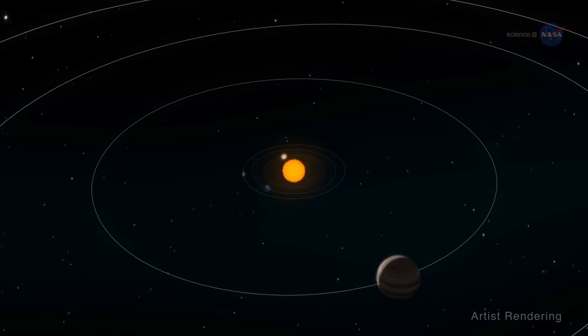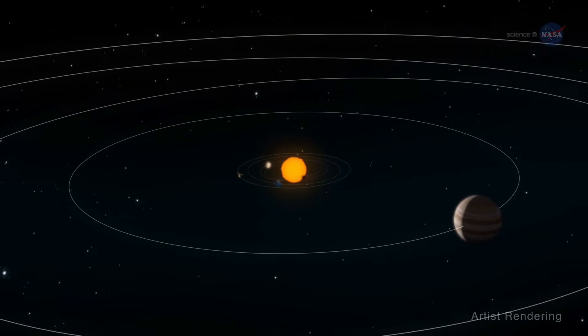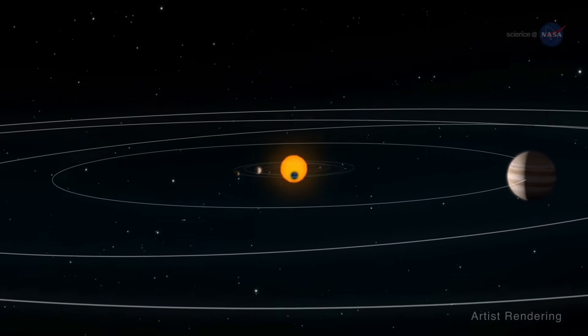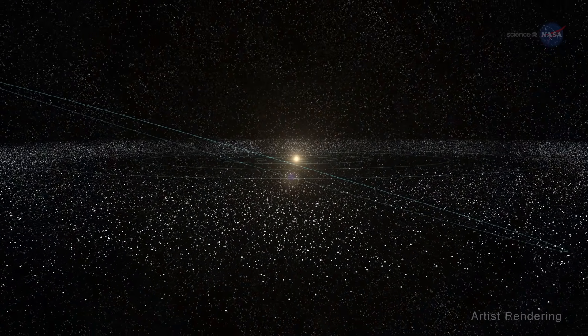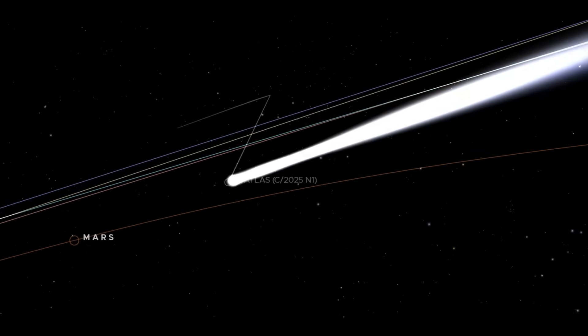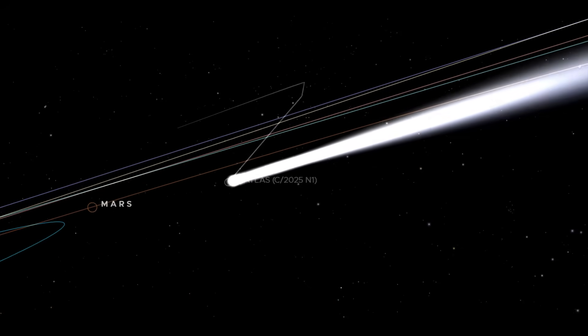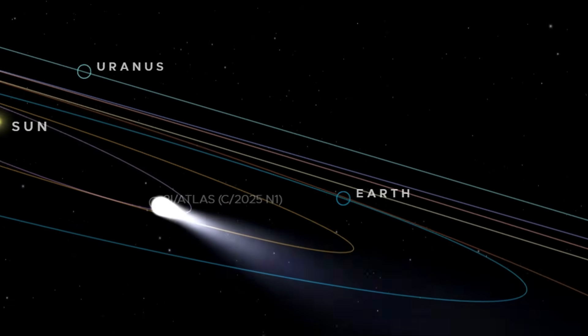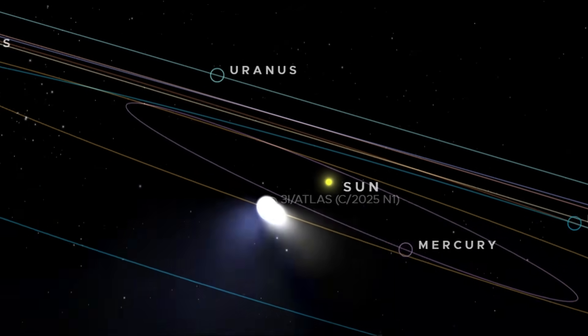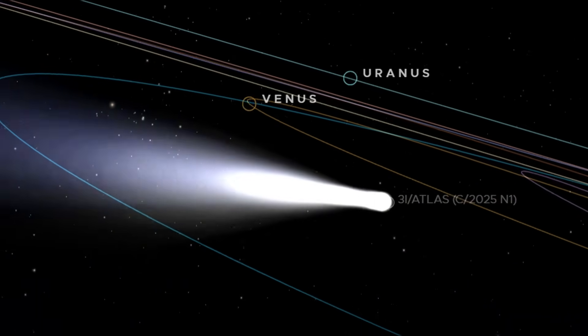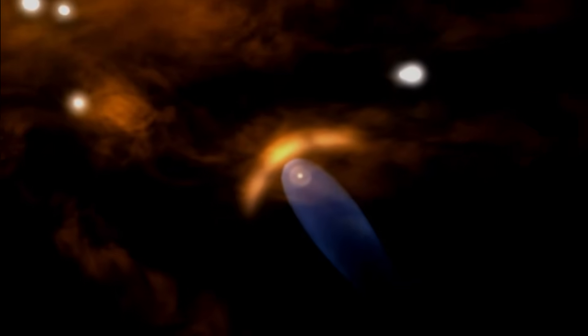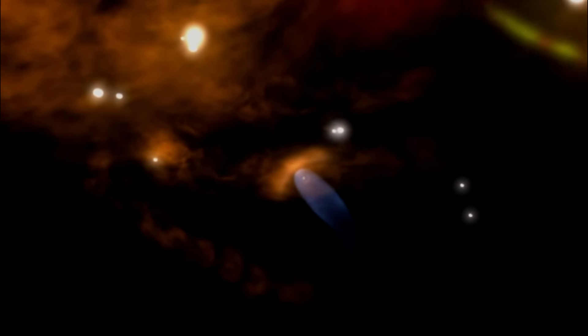What makes it interstellar is its trajectory. Planets, asteroids, and most comets in our solar system travel in closed, elliptical orbits around the sun. However, 3I Atlas is moving on a hyperbolic orbit. This means its velocity is high enough to escape the sun's gravity. It is making a one-time visit to our system. After passing the sun, it will return to interstellar space, never to return.